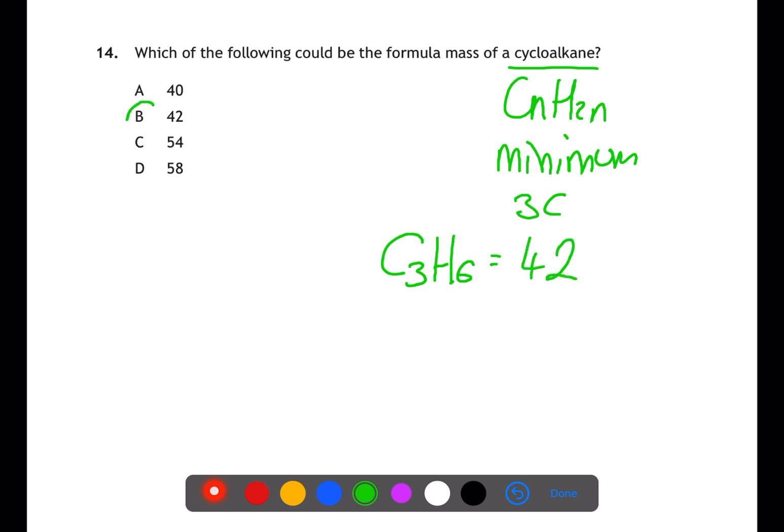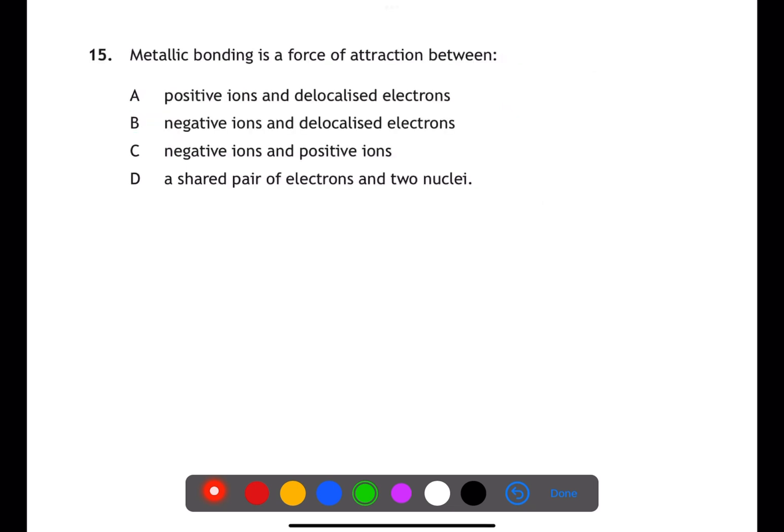Question 15 is testing your knowledge of bonding types. Metallic bonding is a force of attraction between positive ions and delocalized electrons. B is not a type of bonding. C is a definition for ionic bonding, and D is a definition for covalent bonding.